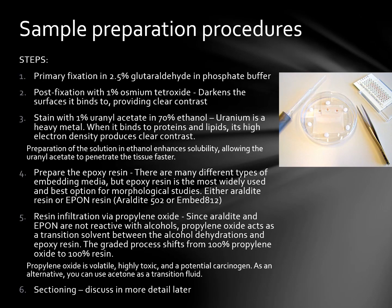Here is a quick example of a sample preparation procedure. The steps are: primary fixation, which is normally 2.5% glutaraldehyde in a phosphate buffer or cacodylate buffer; post-fixation with 1% osmium tetroxide, which darkens the surfaces it binds to, providing very clear contrast; and then staining with uranyl acetate at 1% in 70% ethanol, which helps with solubility, prevents precipitation, and allows the uranyl acetate to penetrate the tissue faster. Uranium is a heavy metal; when it binds to proteins and lipids, its high electron density produces clear contrast within the sample.